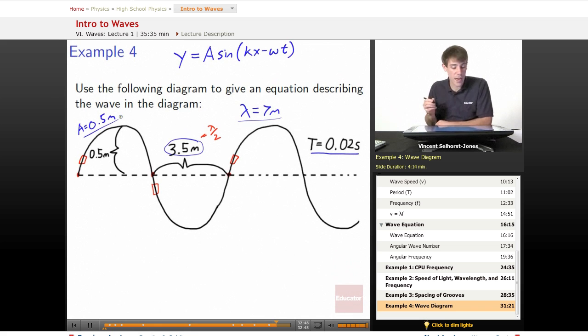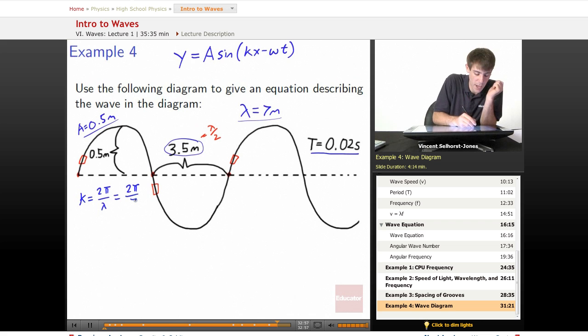So there's all the data that we need. Now we want to solve for what k has to be. k is equal to 2π over lambda, so k is equal to 2π over 7.